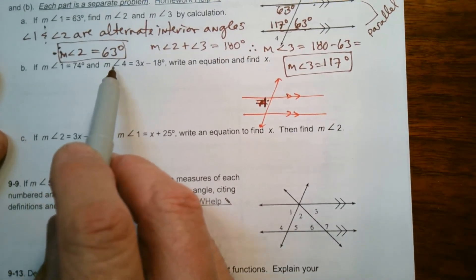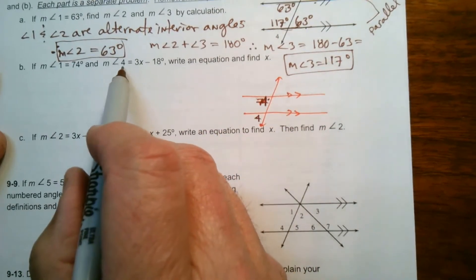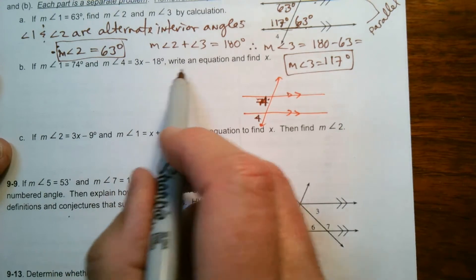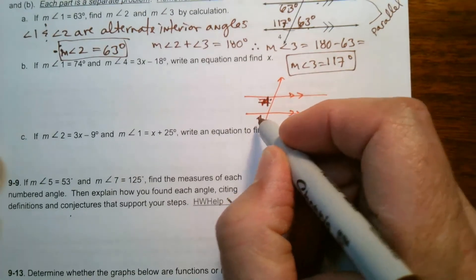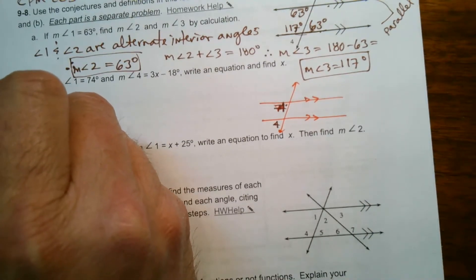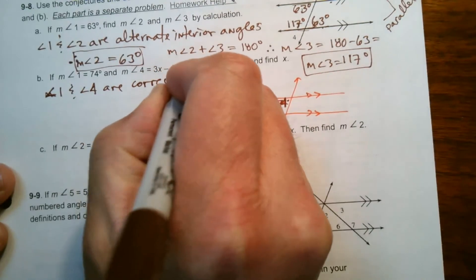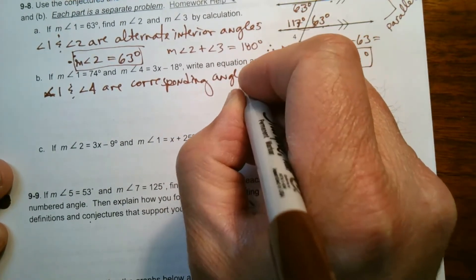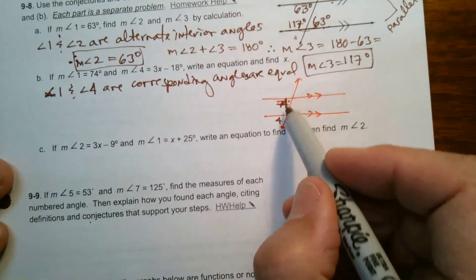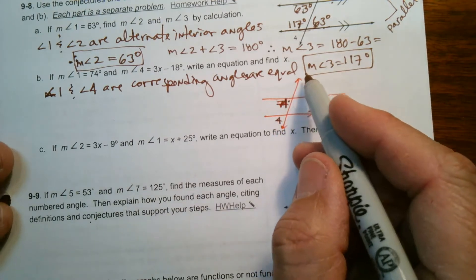It wants us to figure out what x is because it gives us this information. It says that angle 4, which is down here, the measure of angle 4 is 3x minus 18. So write an equation to solve for x. So if we know that angle 1 is 74, then angle 4 is also 74. Because angle 1, angle 1 and angle 4 are corresponding angles. That's the term that we have for those. And corresponding angles are equal. Because they're on the same side of the transversal and they're on the same side of each of the parallel lines. So those are corresponding angles and they're equal.